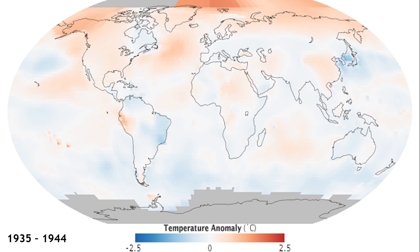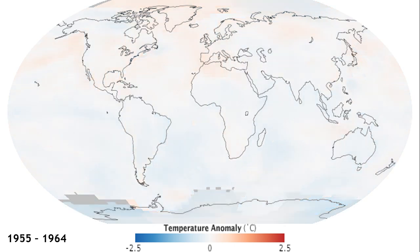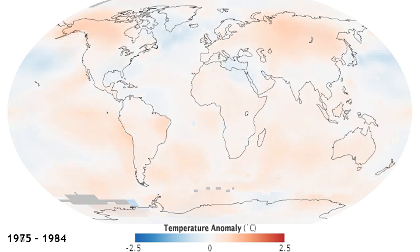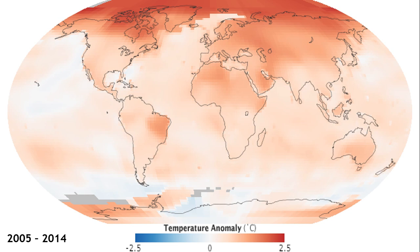From 1945 to 1954, and continuing through 1955 to 1964, then 1975 to 1984 — the period in which industries were revolutionizing — and after that, 1985 to 1994, the temperature is constantly increasing. The latest picture from 2005 to 2014 shows that global warming has significantly increased the overall world temperature.